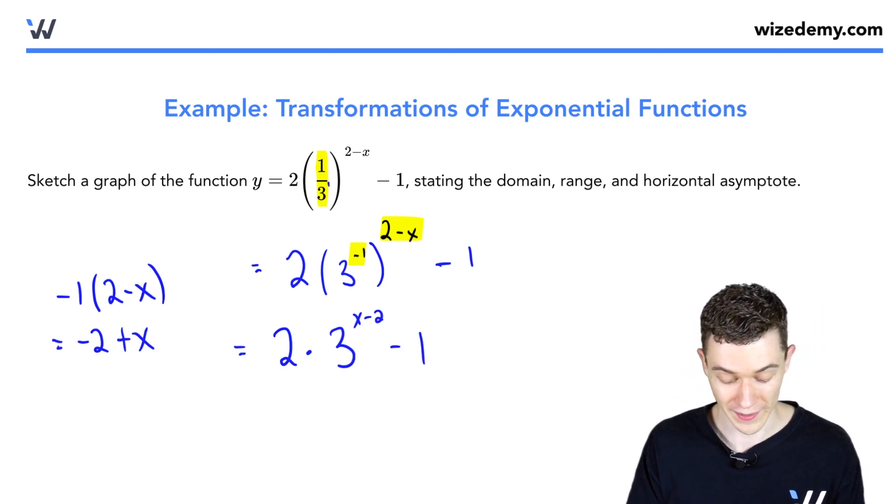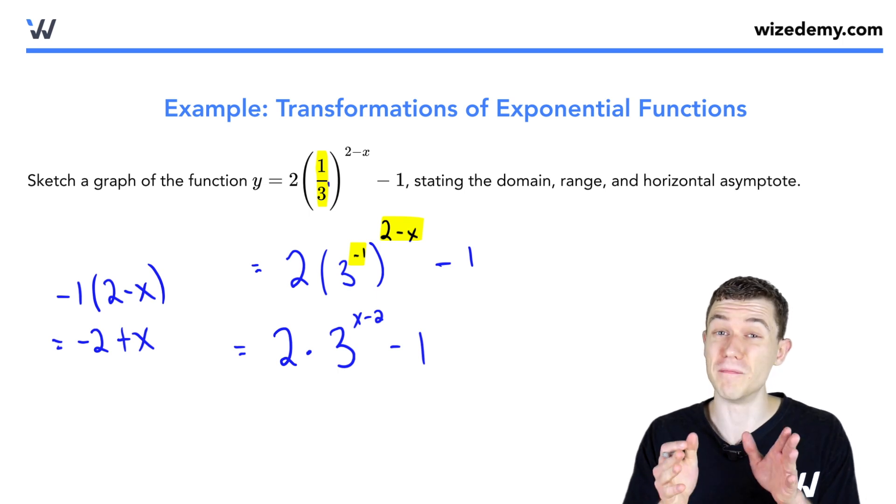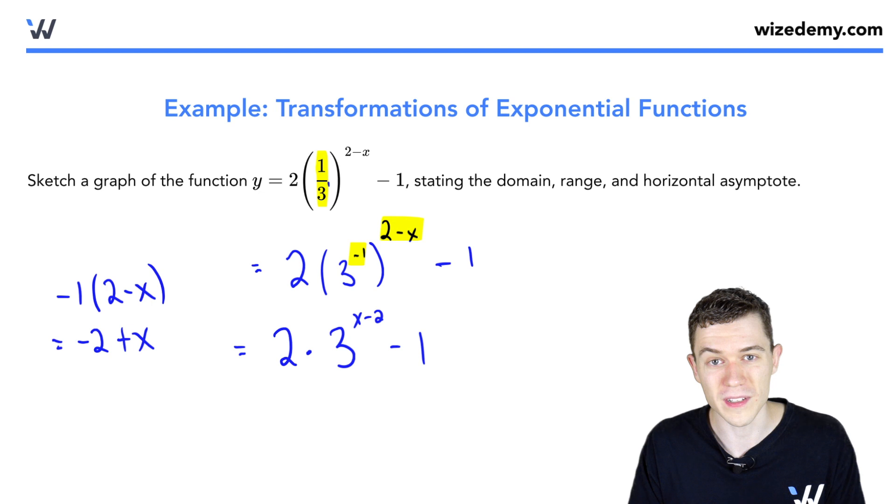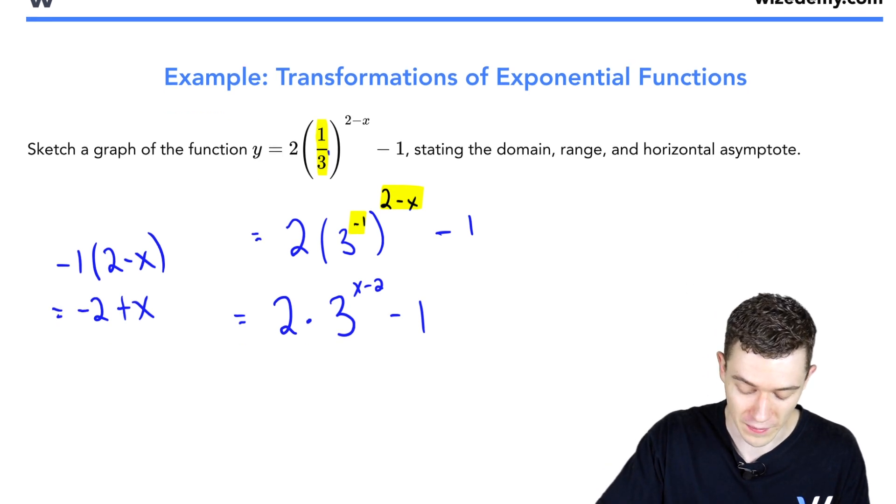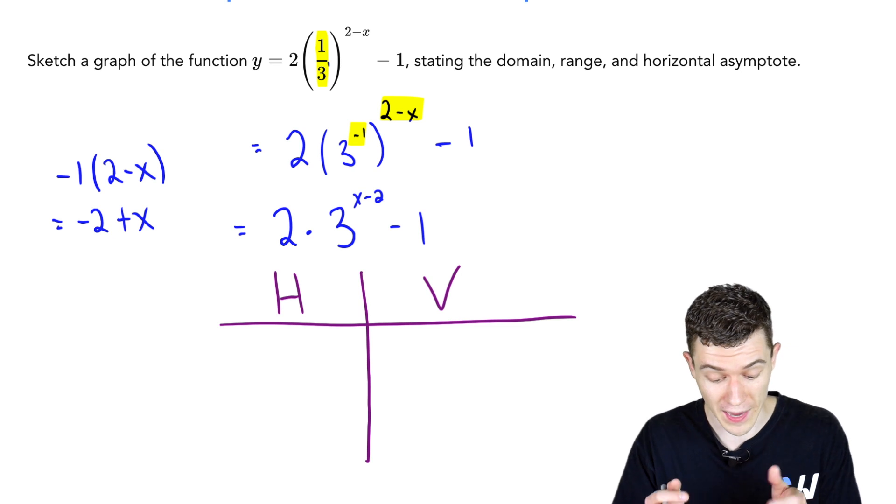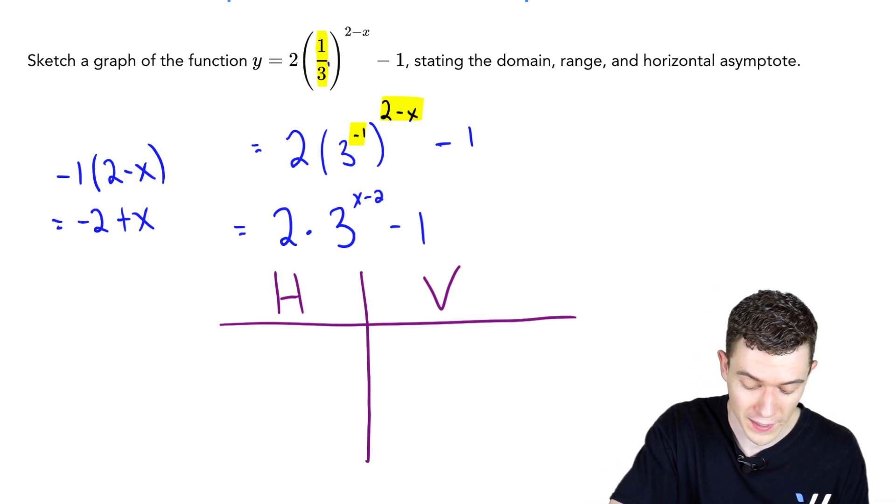Now this function is much nicer to deal with. We can clearly identify those horizontal and vertical transformations. The horizontal transformations happen in the exponent, the x minus two. The only thing is that minus two, that's an h value of two.